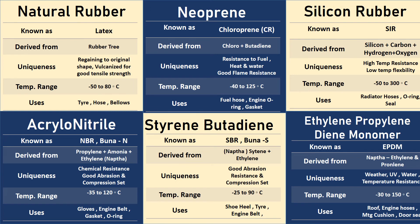The final rubber is EPDM — ethylene propylene diene monomer. It is derived from ethylene and propylene, which are by-products of naphtha, derived from crude oil. Its uniqueness includes high weather resistance, high UV resistance, high water resistance, and high temperature resistance. The temperature range is minus 30 to 150 degrees Celsius. It is a cheaper and economical rubber, widely used in automobile and engineering fields. Uses include roof linings, engine hoses, mounting cushions, and door seals.